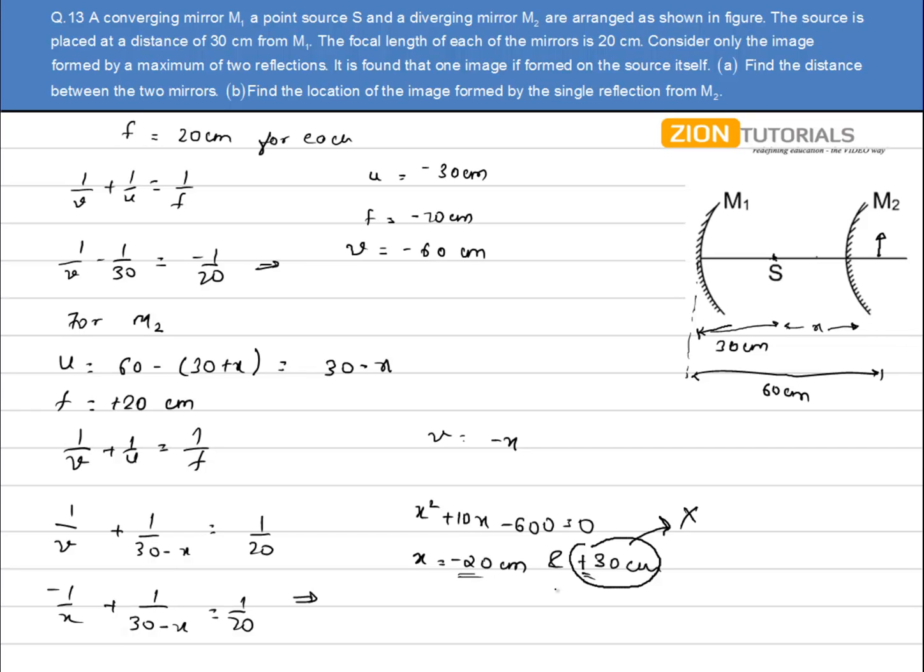I will take minus 20 cm. That is, the value of x will be 20 cm. This distance will be 20 cm. So the distance between the two mirrors will be 30 plus 20 cm, that is 50 cm.